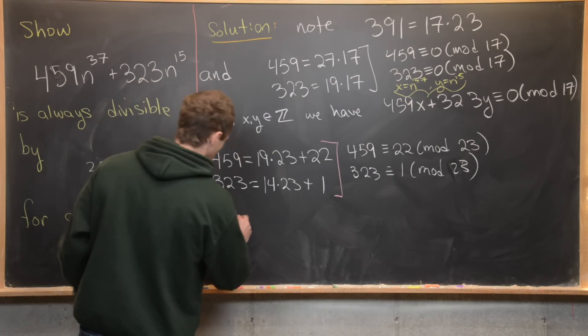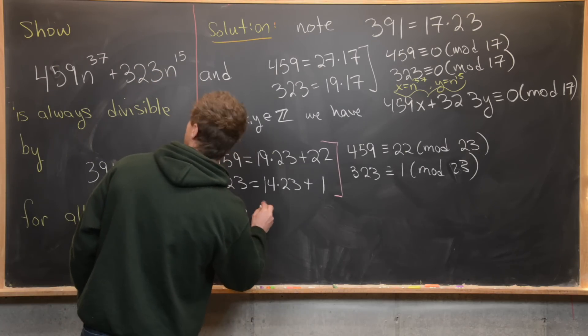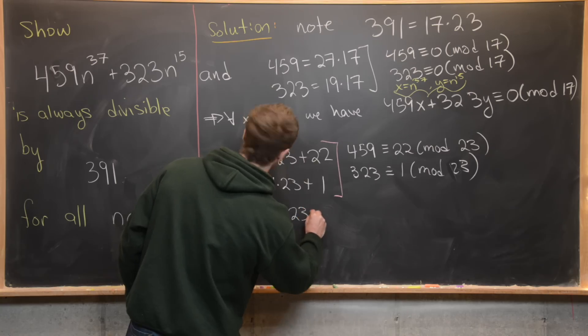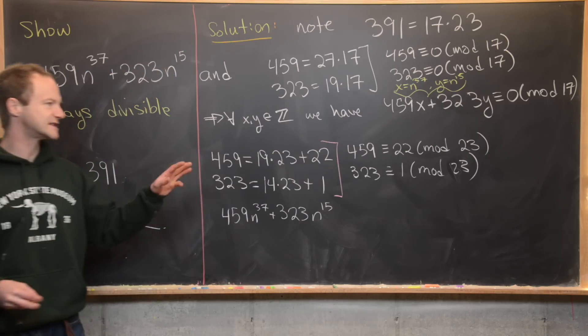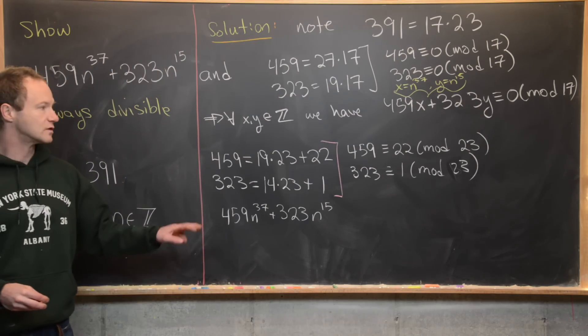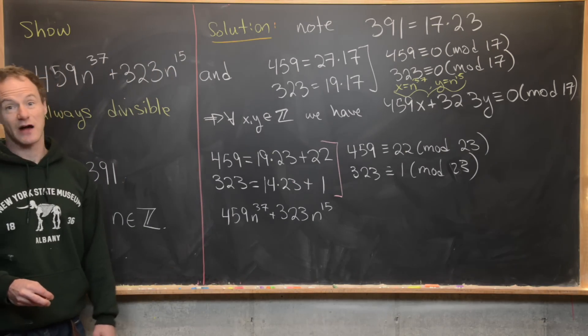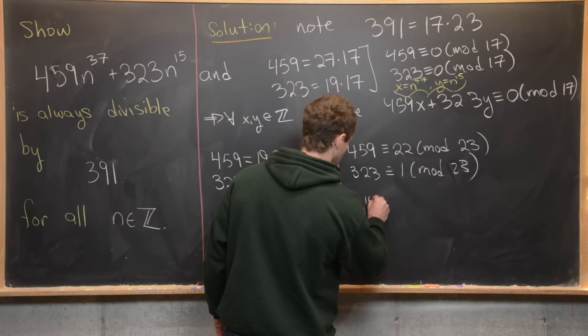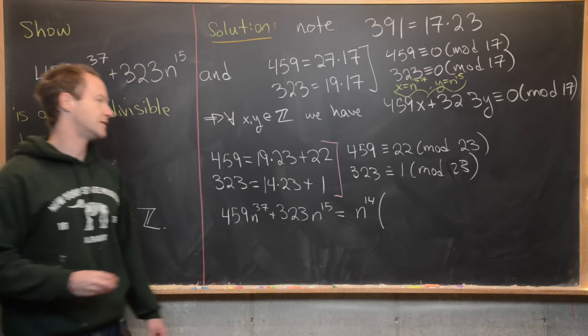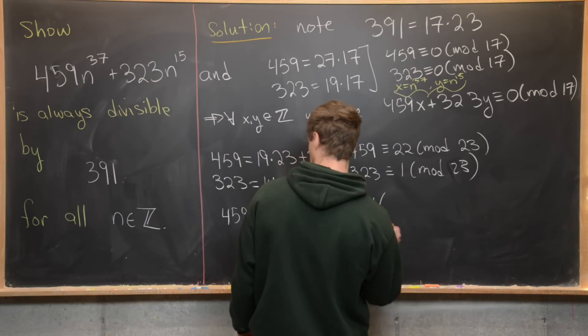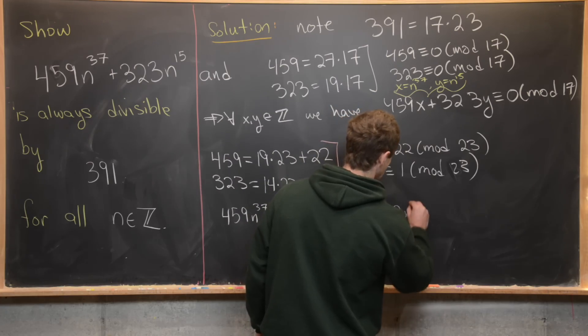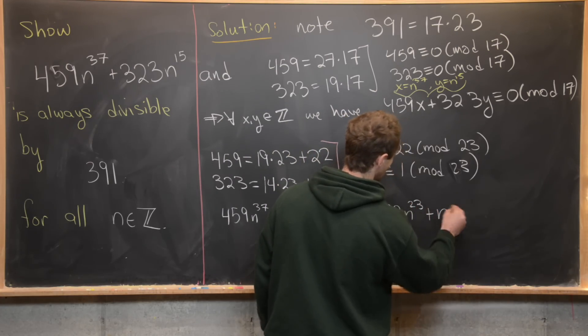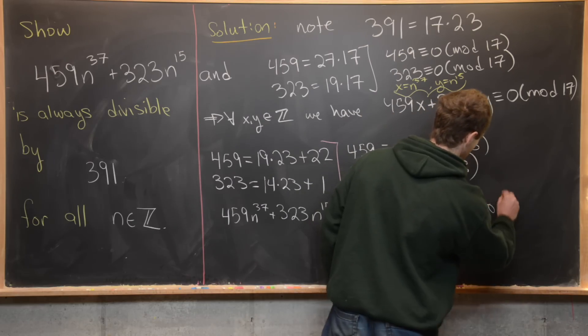Let's take our goal here, which is 459 n to the 37 plus 323 n to the 15, and simultaneously reduce it modulo 23 and factor out some powers of n. Let's factor out an n to the 14, and then reduce these coefficients mod 23. That's going to leave us with 22 n to the 23 plus 1 n to the 1 power. That's what we have mod 23.